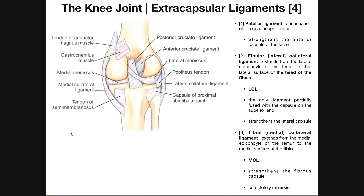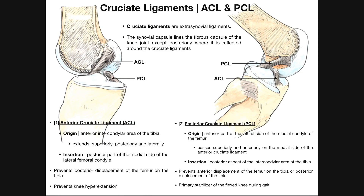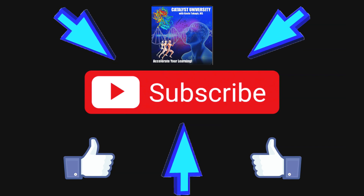Hopefully this video gave you a good understanding of these three extracapsular ligaments of the knee. There are others we'll cover in future videos, but these are three of the major ones. In the next video, we're going to talk in more detail about the cruciate ligaments — ACL and PCL — which are intracapsular ligaments. After that, we'll talk about the menisci, and then what kinds of forces can cause particular injuries to the knee. Please make sure to like this video and subscribe to my channel for future videos and notifications. Thank you.